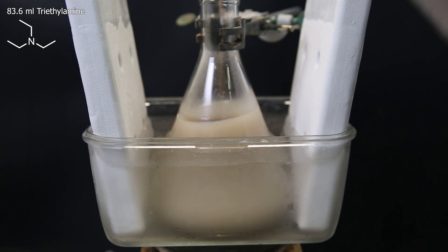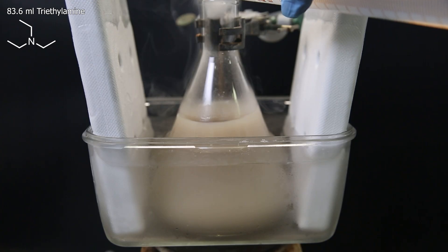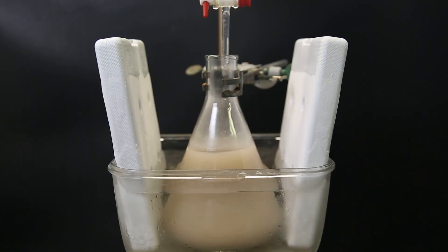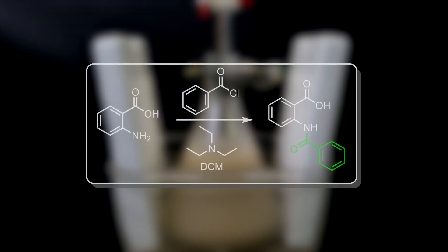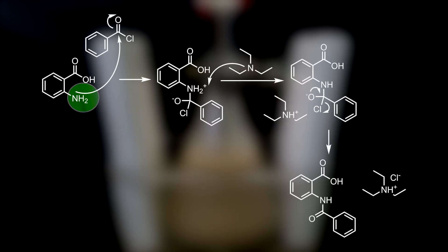I measured it out in the same cylinder, so it became a bit cloudy, but it doesn't matter. I first added in a tiny bit to check the reaction, and then drip it in slowly with a sep funnel. In this reaction, anthranilic acid reacts with benzoyl chloride in the presence of a base to give the corresponding amide.